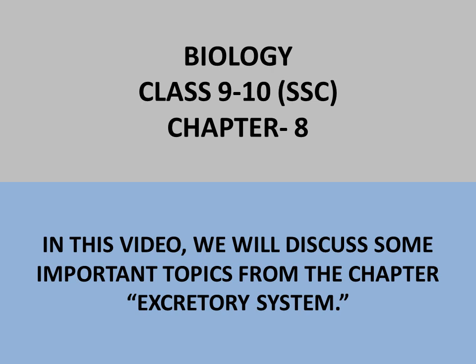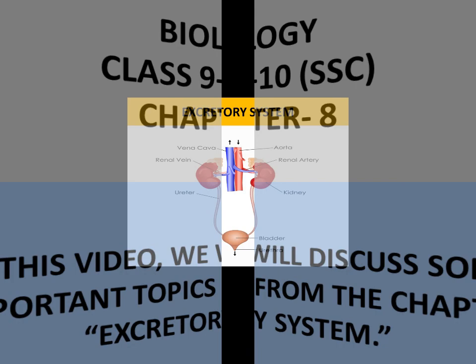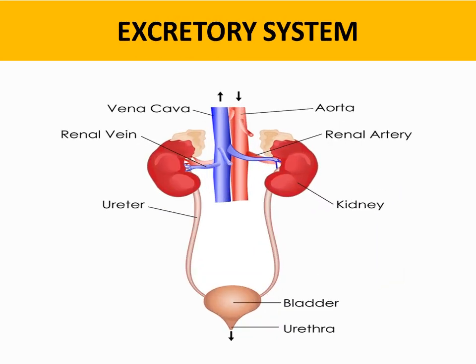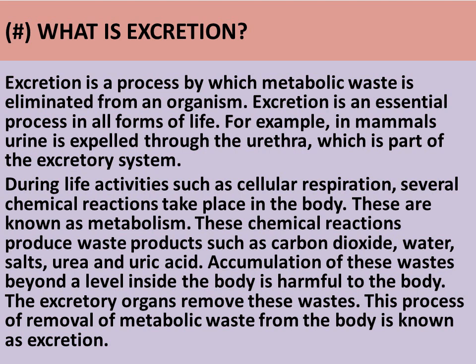Welcome to School 2020. In this video we will discuss some important topics from the chapter on the excretory system. Excretion is a process by which metabolic waste is eliminated from an organism. Excretion is an essential process in all forms of life. For example, in mammals, urine is expelled through the urethra, which is a part of the excretory system.